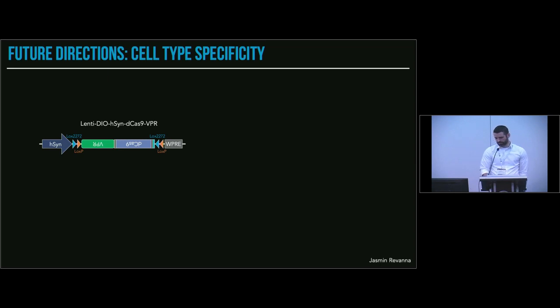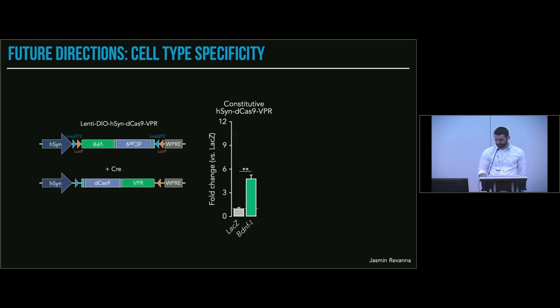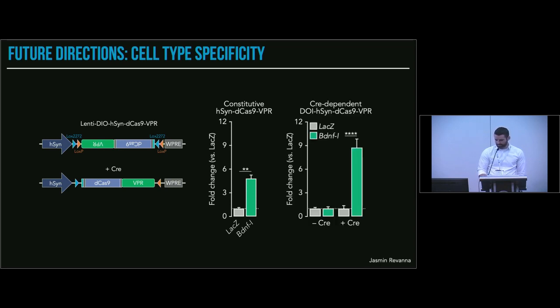Where are we going with this? One of the things that we really want to do is get cell-type specificity for this approach. Jasmine Ravonna, an undergraduate student in the lab, designed a basically double inverted open reading frame version of this using two heterotypic Lox sites, inserting these around the dCas-VPR transgene. With Cre, it flips around. This is showing our constitutive version that I've been showing you all along, induction of BDNF1. Addition of Cre using this DIO transgene allows selective activation of genes only with Cre on board.